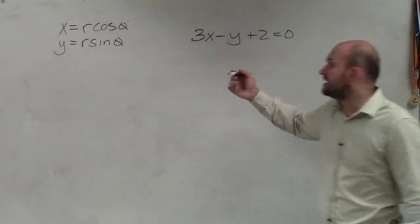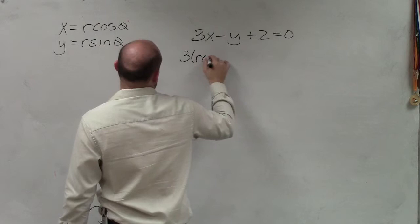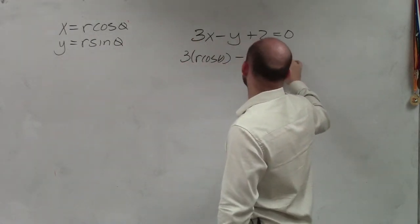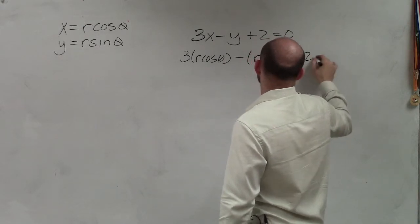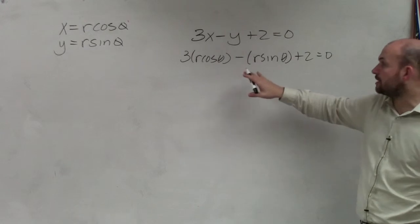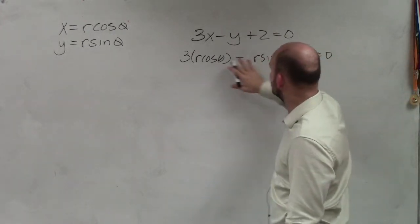I'm just going to plug those values in. So I have 3 times r cosine of theta minus r sine of theta plus 2 equals 0. Now, what we need to do is solve for r. I can eliminate these parentheses - they're not really doing anything for me.